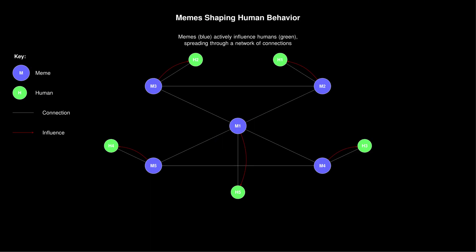But here's where things get really interesting. Memetics suggests that memes don't just passively spread — they actively shape our behavior to ensure their own replication. In other words, memes use us as their hosts, much like viruses use cells to replicate. This idea might seem a bit unsettling at first. Are we just passive vessels for the spread of ideas? Not quite. We still have agency in choosing which memes to adopt and spread, but memetics does challenge our notion of where ideas come from and how they spread.